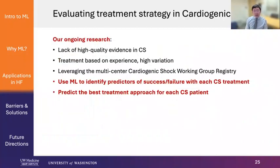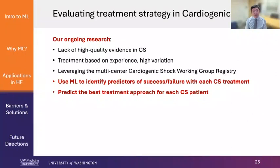Ongoing research we are doing here is to use machine learning to evaluate treatment strategies in cardiogenic shock. We are doing this because there is a lack of high-quality evidence in cardiogenic shock and treatment is generally based on experience, with a lot of variation among physicians and hospitals. We are leveraging the same multicenter cardiogenic shock working group registry, using machine learning to identify predictors of success versus failure for each cardiogenic shock treatment — whether inotropes or different types of MCS treatments — to predict the best treatment approach for each patient.